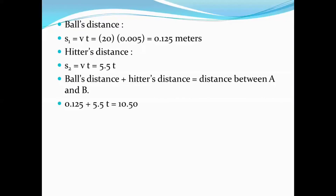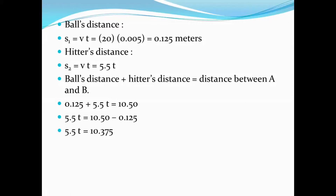Ball's distance is 0.125 meters, as we evaluated. For hitting the ball, person B has traveled at a constant velocity of 5.5 meters per second, covering some distance in time T. So 5.5 times T is the distance traveled by the hitter, and total distance between A and B is 10.5 meters. So the time required for the hitter is 1.886 seconds.